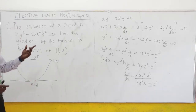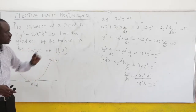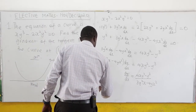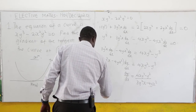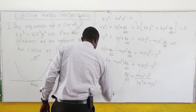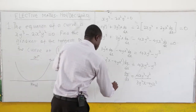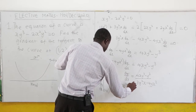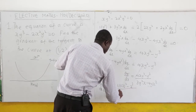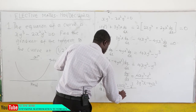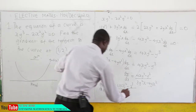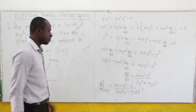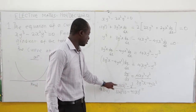Clearly, the gradient of the curve at the point (1, 2) is the same as the gradient of the tangent. So we evaluate dy/dx at the point (1, 2): that is 4 times x=1 times y=2 squared, minus 2 to the power 3, all over 3 times y=2 squared times x=1, minus 4 times y=2 times x=1.